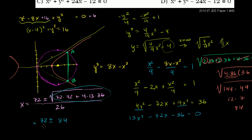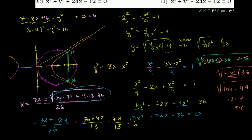So x equals 72 plus or minus 84, all over 26. Dividing numerator and denominator by 2 gives 36 plus or minus 42 over 13. We're looking for a positive x value, so we take the plus: 36 plus 42 is 78, and 78 over 13 equals 6. The x-coordinate is 6.